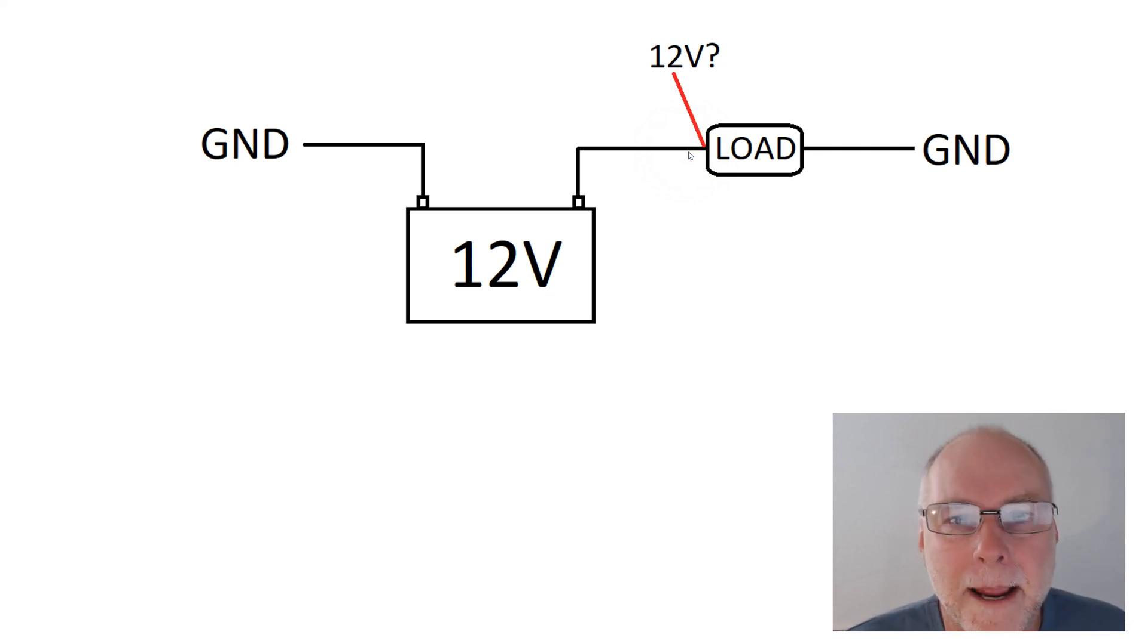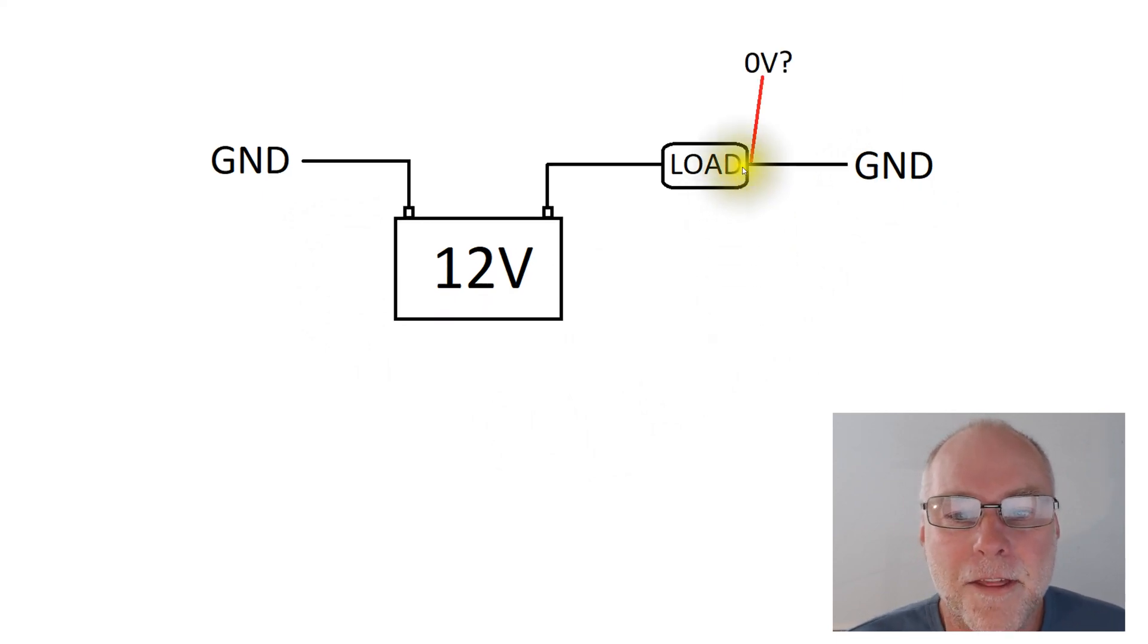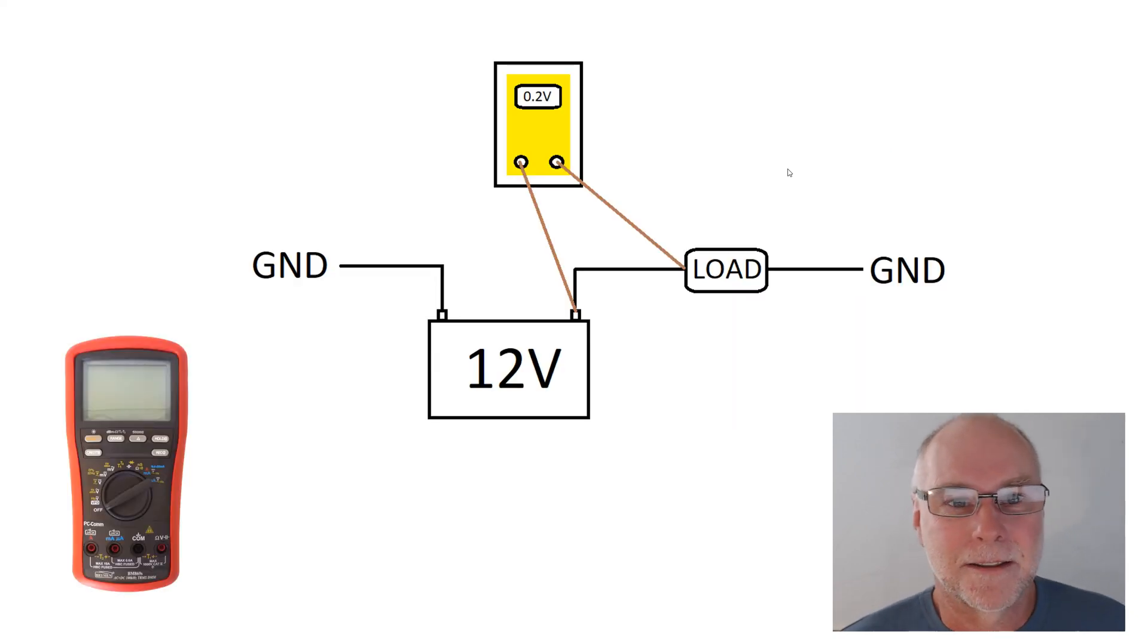What about on the ground side? Would we expect to see zero volts there? Yes, we would, because it's connected to the ground and the ground's connected to the other ground, which in turn is connected to the negative side of the battery. But what about there? Would we expect to see zero volts there? Again, only if this is a perfect conductor. These conductors and no conductors are perfect, and the higher the amount of current that the load is taking, the less perfect, if you like, you're going to be able to see that conductor being. So let's put a multimeter on the circuit.